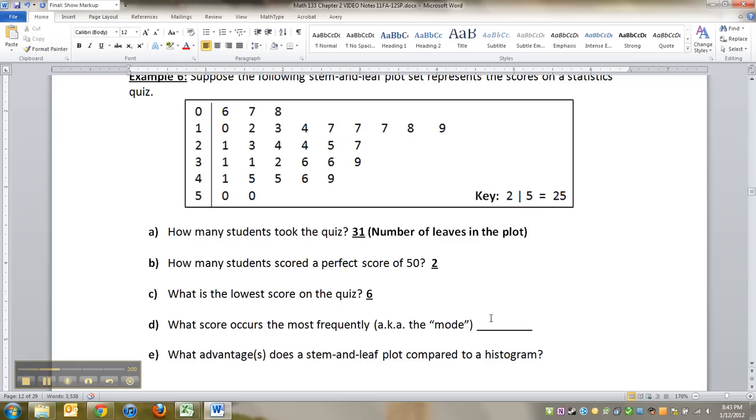What score occurred the most frequently? Well, looking to me like these three sevens right here. Those are the most repeating, and that would be one seven, so that's 17. 17 occurred the most often, and there were, I'm going to make a note, there were three students at 17.